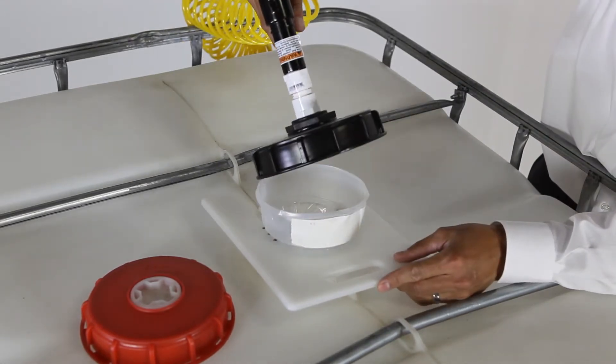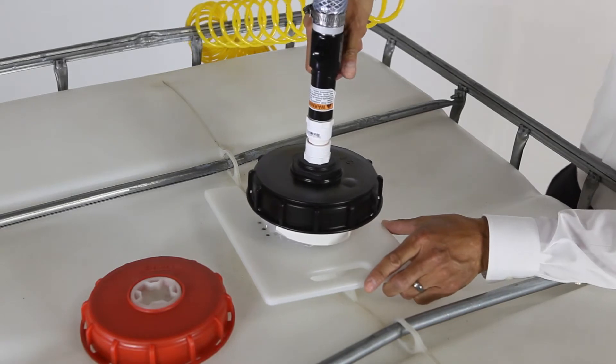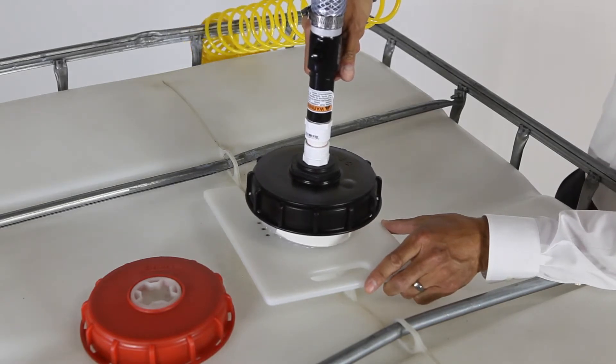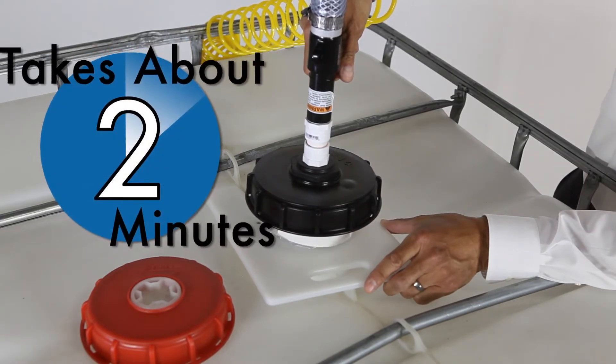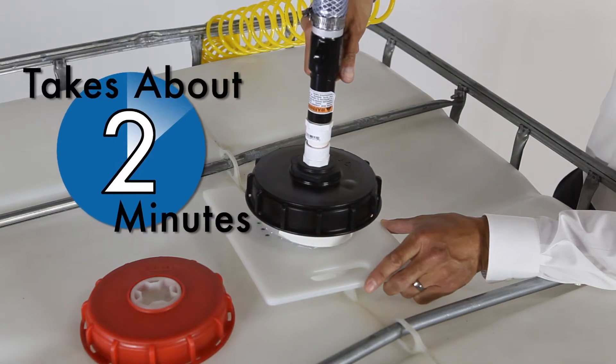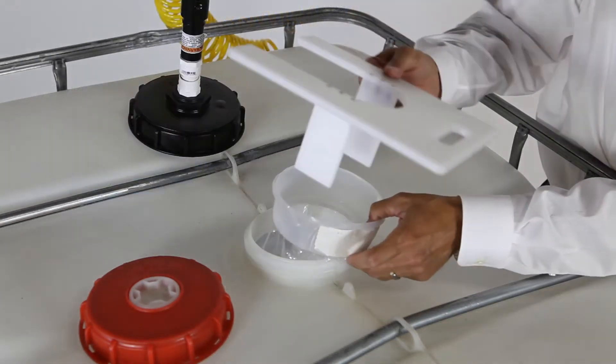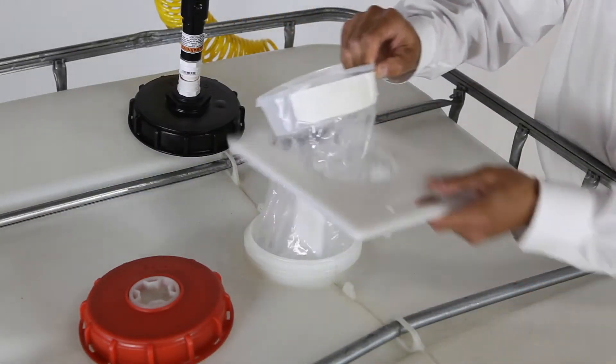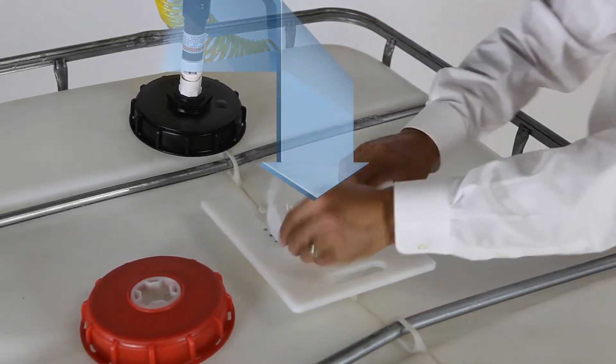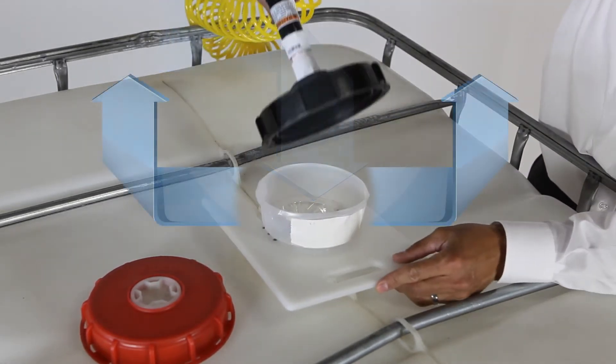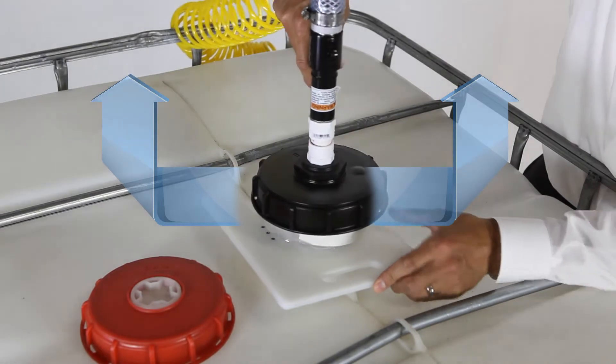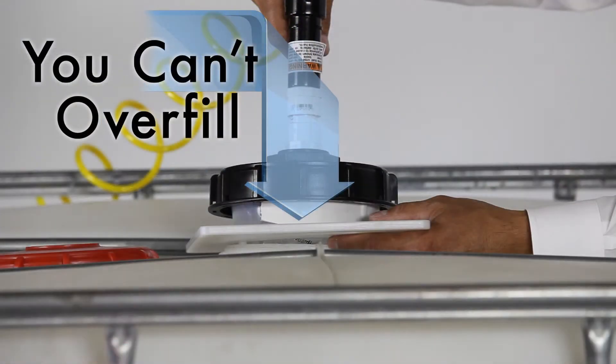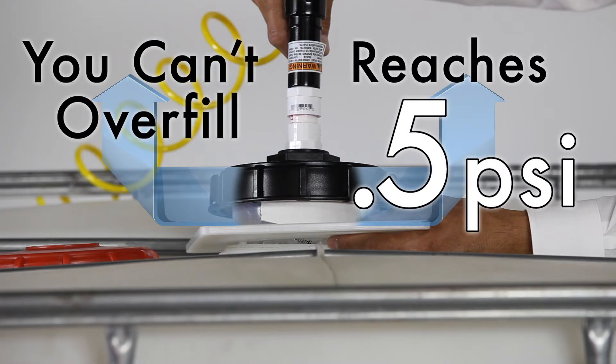Carefully place the fill dispense air tool over the fill flange and begin filling with air. This process typically takes about two minutes to complete. The fill deck has two tabs that hold the liner away from the IBC and allow trapped air to escape. You cannot overfill the IBC with the fill dispense tool. It reaches a pressure of 0.5 psi and no more.